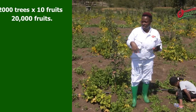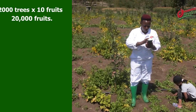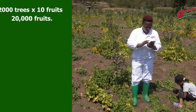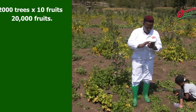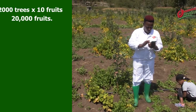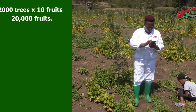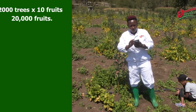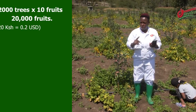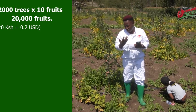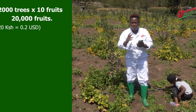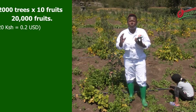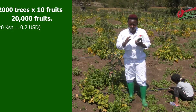20 shillings is like 0.2 dollars — let me work it out. For dollars it's 0.2 dollars, I'm assuming that's the wholesale price. So I multiply the 20,000 by 20 shillings, or 0.2 dollars, and I will get 400,000 — 400,000 the first year.